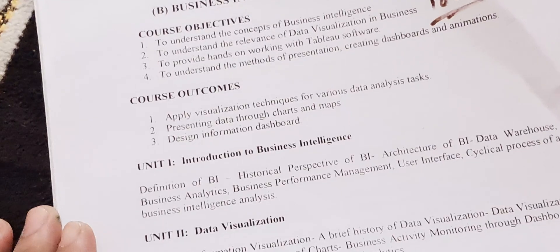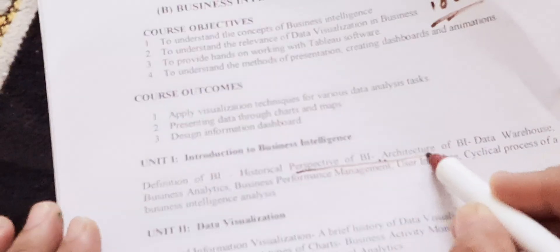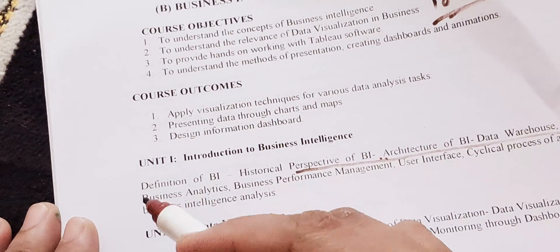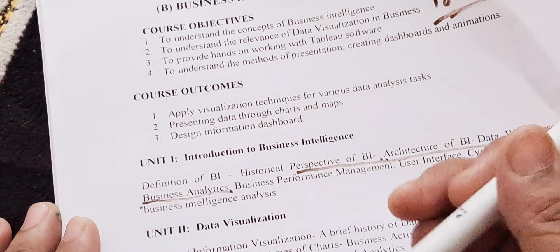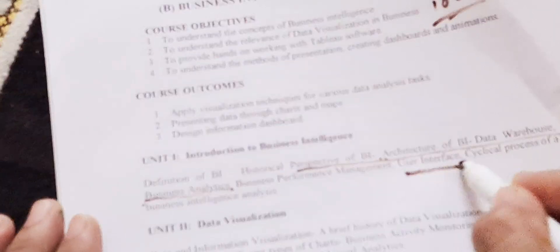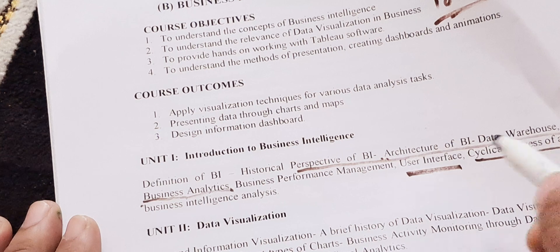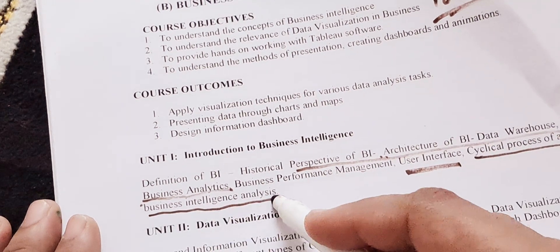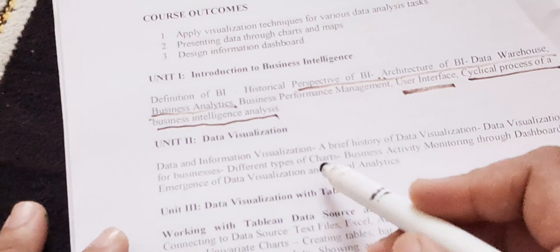In unit one, the most important topic is the architecture of Business Intelligence — the BI architecture, data warehouse, and data analysis. Then we move to user interface and the cyclical process of a Business Intelligence analysis.